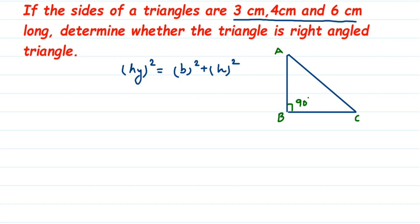This side which is opposite to the 90 degree, this is 90 degree opposite to this is AC. AC will become hypotenuse and hypotenuse is always the longest side as compared to the other two sides. Here if you see we have 3, 4 and 6. 6 is the longest one which means 6 centimeter will be the hypotenuse here.